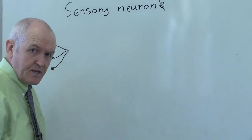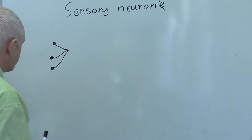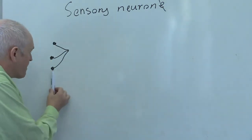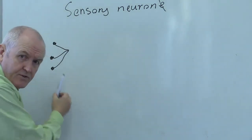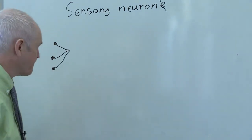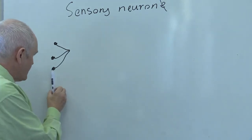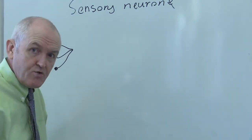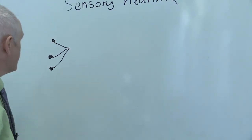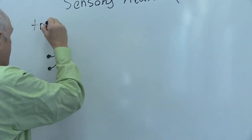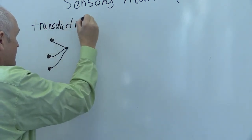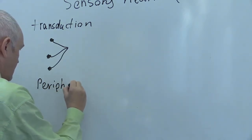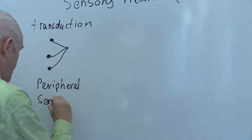There will be an external stimulus to these peripheral sensory receptors. Suppose these are touch receptors — someone touches the surface of your skin, there's some contact. When you experience that touch, a touch receptor generates a brand new nerve impulse, and that process is called transduction, taking place in these peripheral sensory receptors.